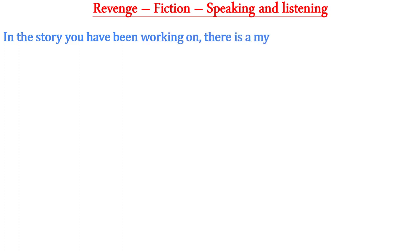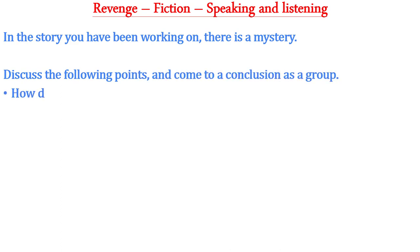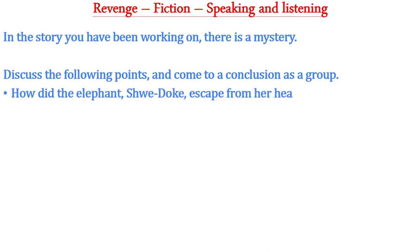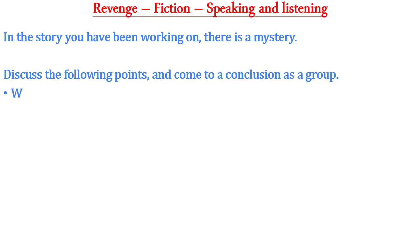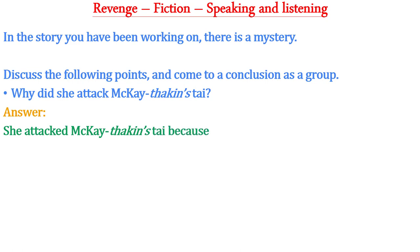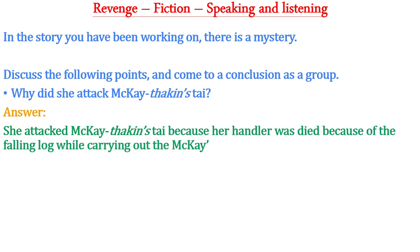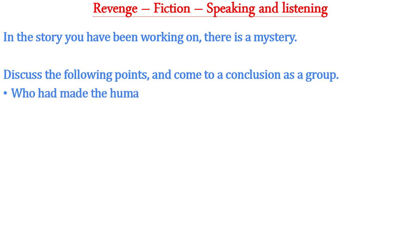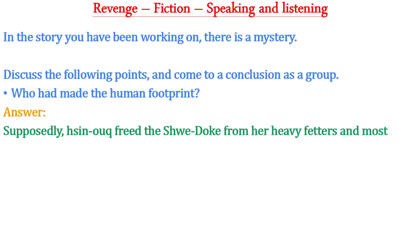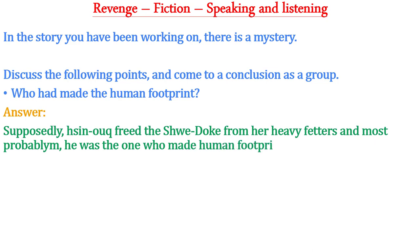Speaking and listening: in the story there is a mystery. Discuss the following points and come to a conclusion as a group. First: how did Shuidok escape from her heavy chains? Shuidok was most probably freed by Shinok. Second: why did she attack Mackay Thakin's tie? She attacked because her handler had died due to a falling log while carrying out Mackay's order, and she wanted to take revenge for her handler's death.